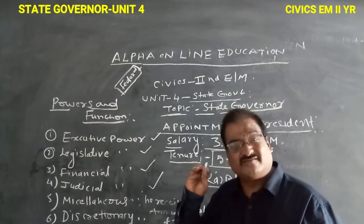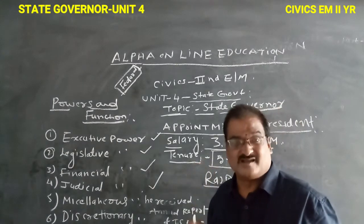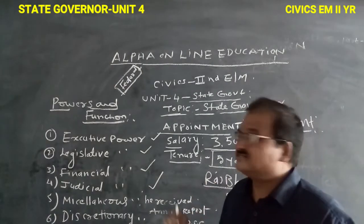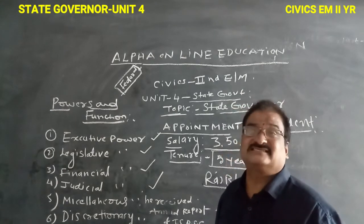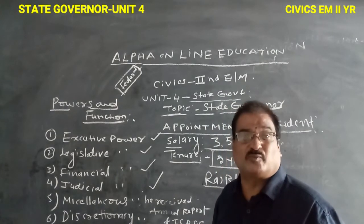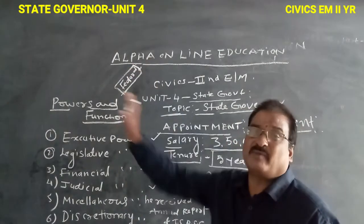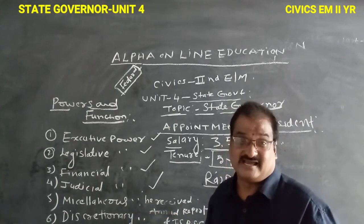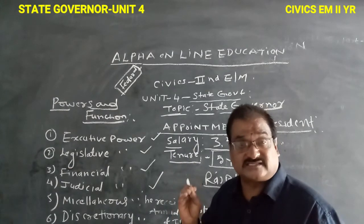The choice of ministers is in the hands of the Chief Minister — the Chief Minister chooses the ministers and the Governor formally appoints them. The Governor also appoints the State Public Service Commission Chairperson and Vice Chancellors of all state-level universities.